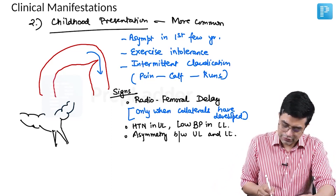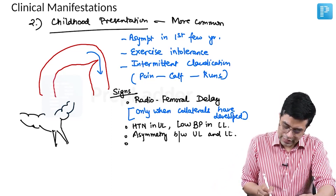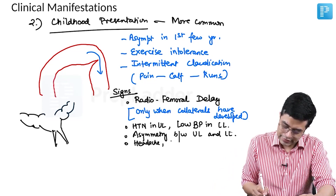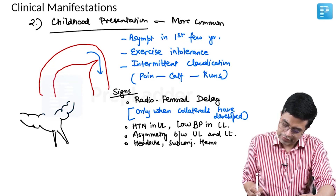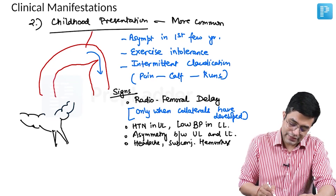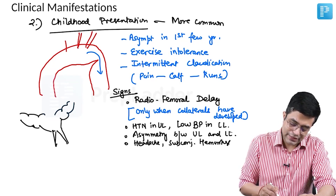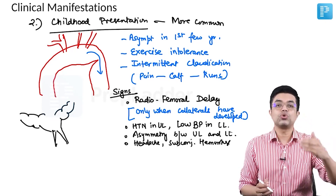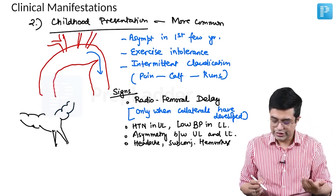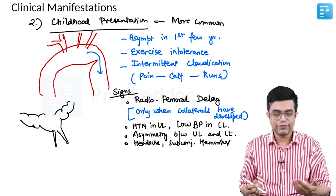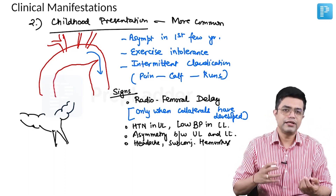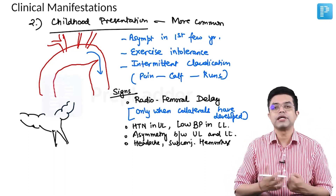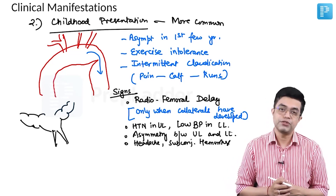These patients also experience episodes of headache and subconjunctival hemorrhage. This occurs because all the carotid and subclavian vessels arise proximal to the narrowing, so blood supply to them is chronically increased. This can also be related to persistent hypertension that develops in most of these patients.